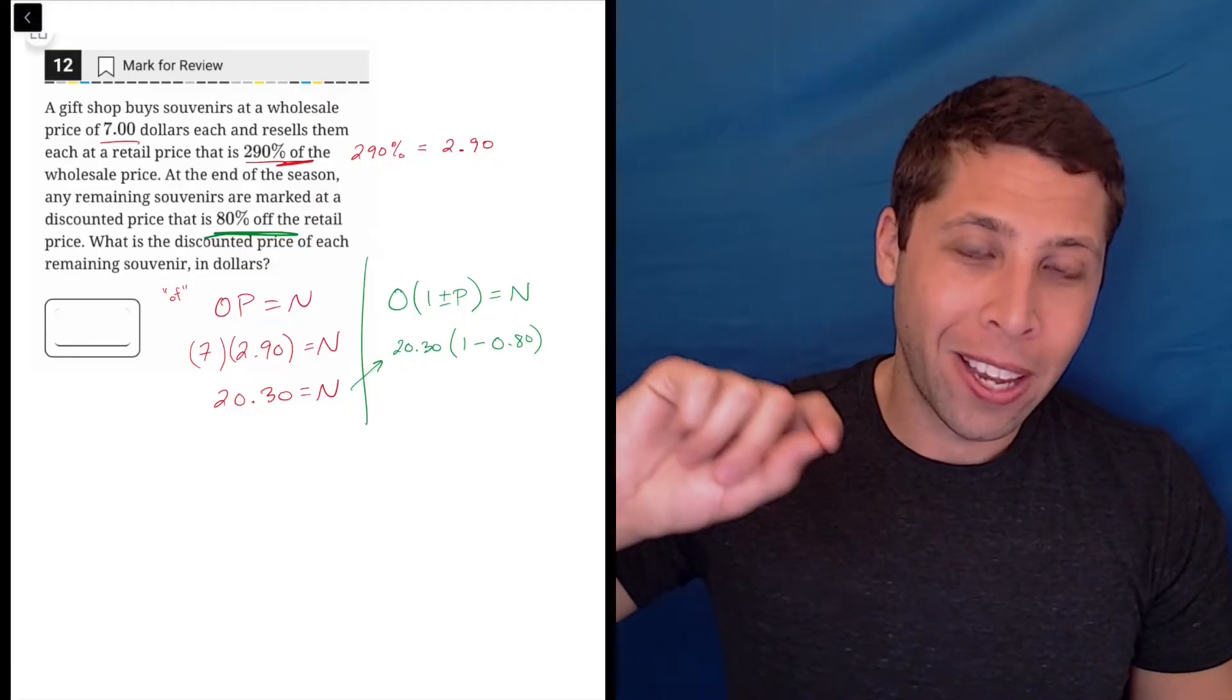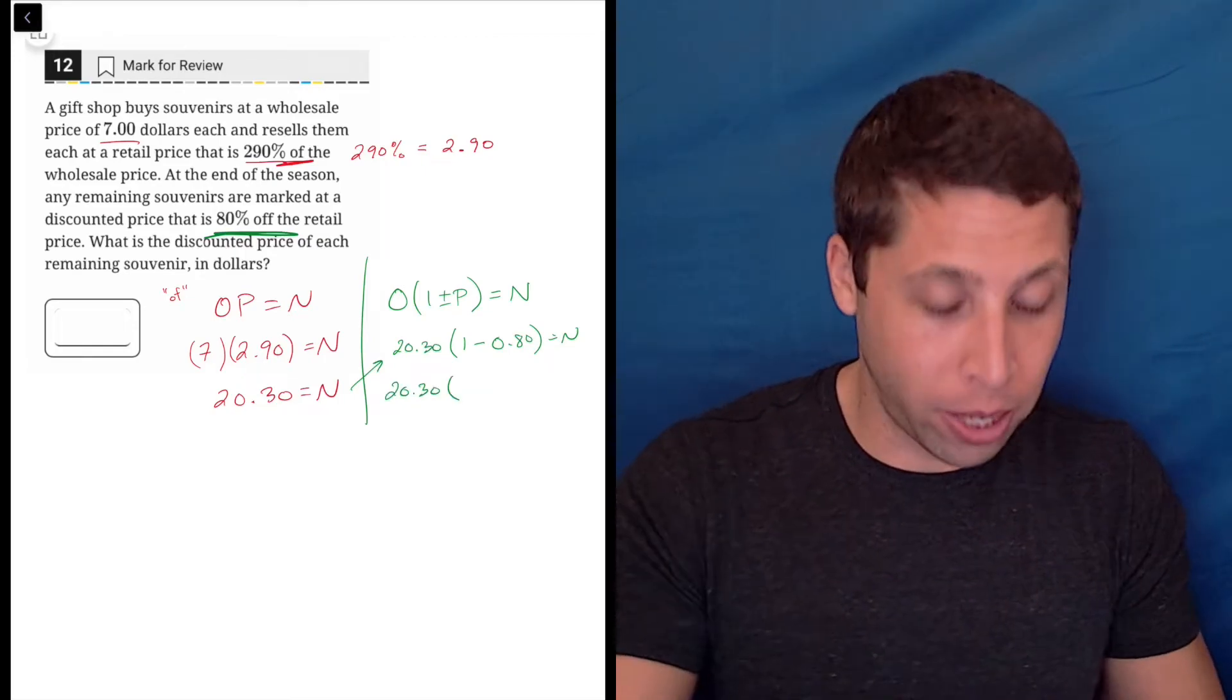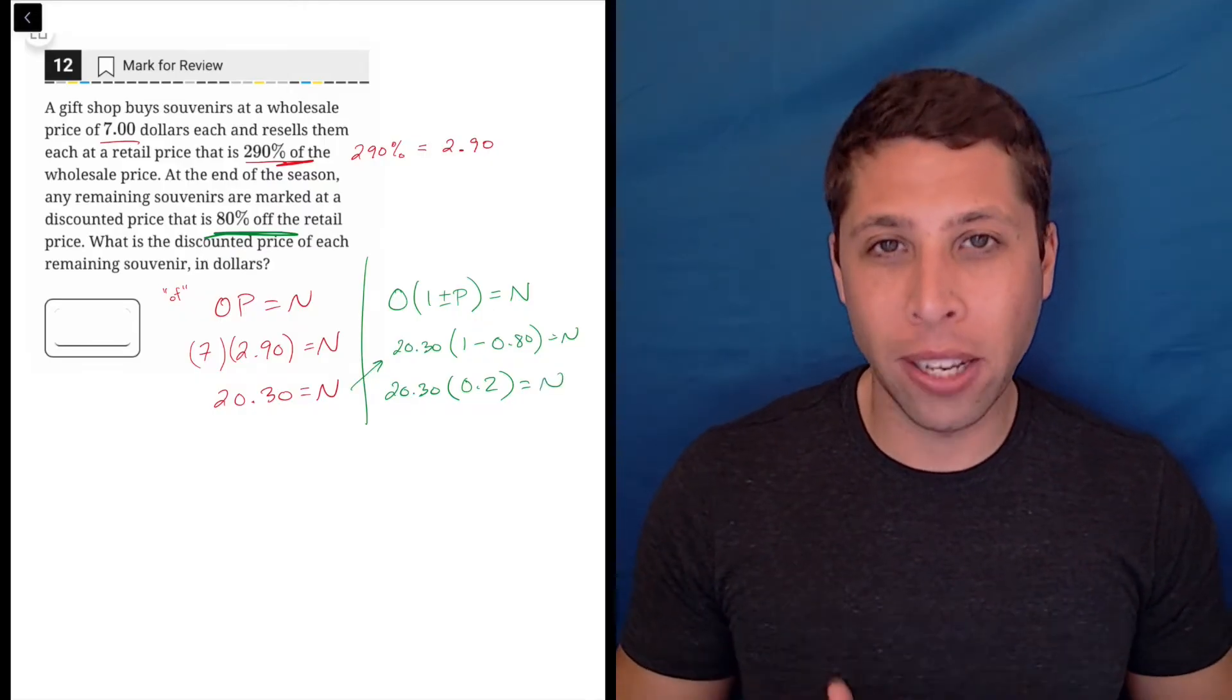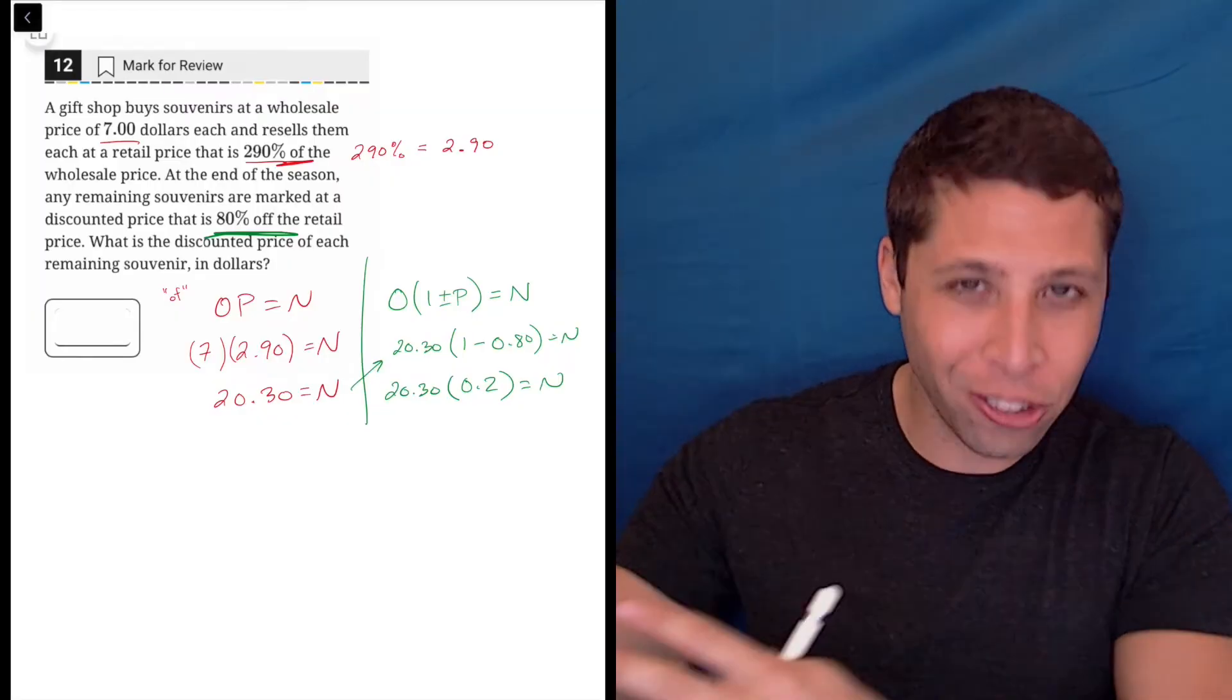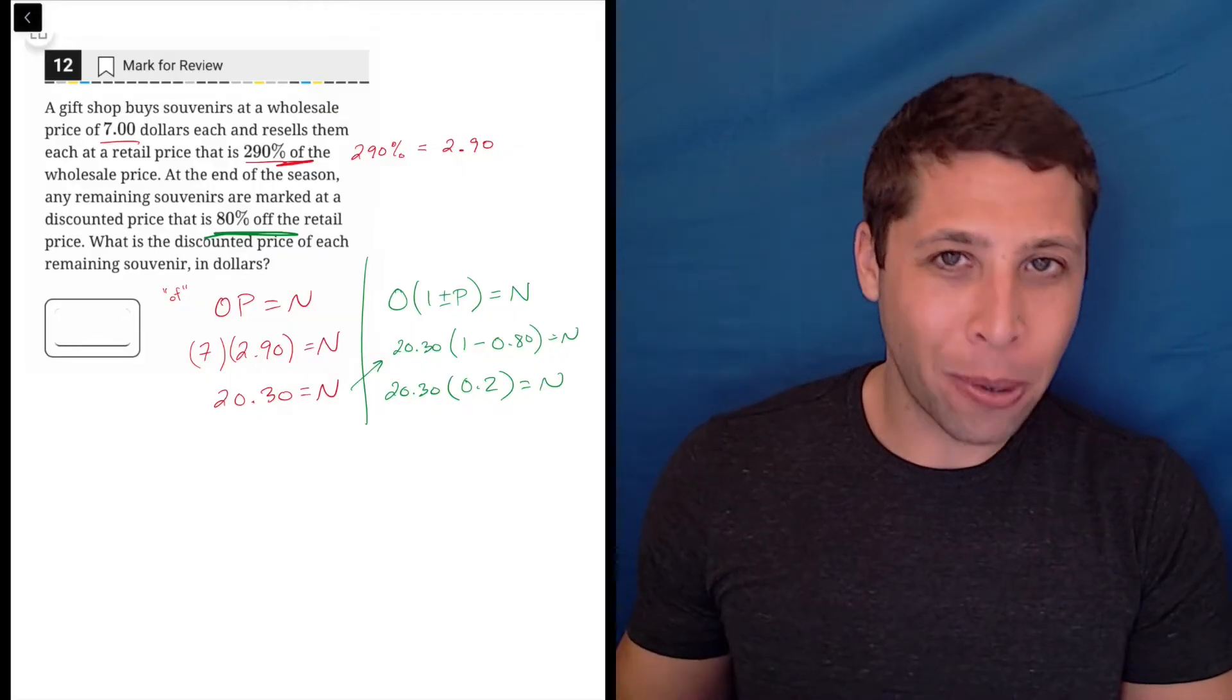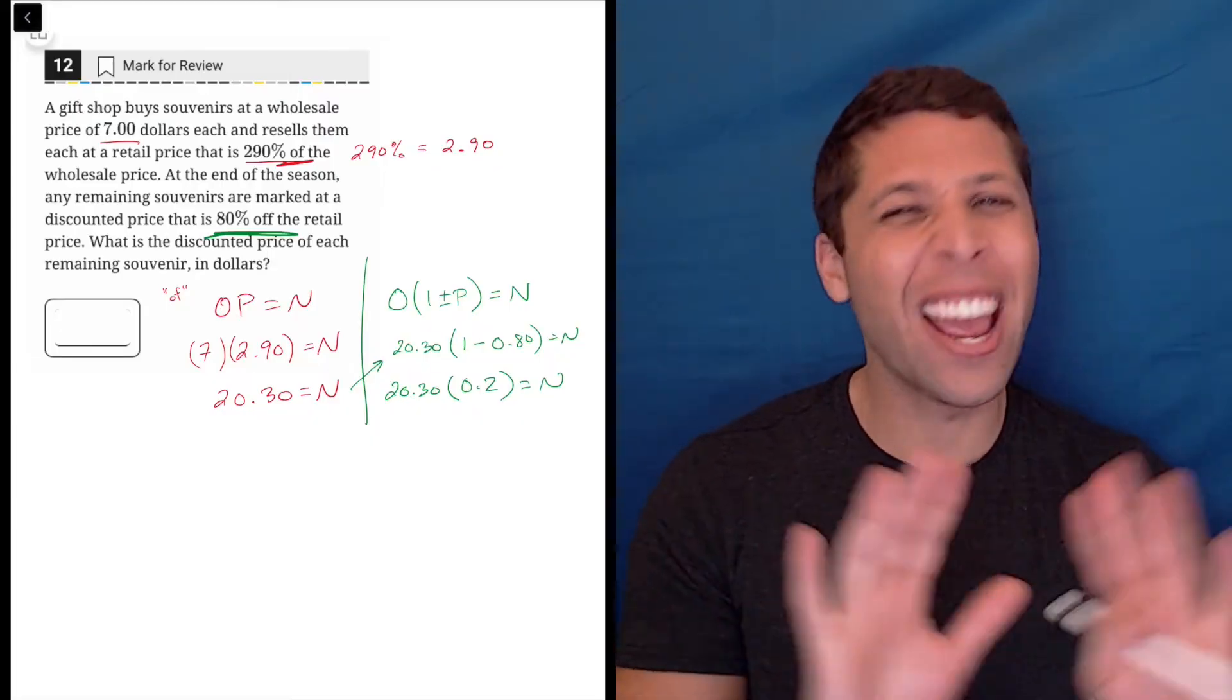But notice it's not going to look like 80% in my formula. If I start to reduce this, 20.31 minus 0.8 is 0.2. So this is the trick. When we have a percent change, sometimes the percentage doesn't look like what we expect it to be. The question, the story tells us 80% off, but the way the math works, 80% off is really 20% on, and the math is about the percent on.